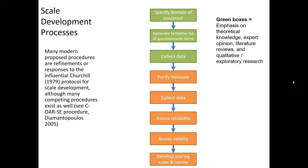Here's the eight-step process that Churchill recommends when developing your own scale. I'm not going to go into the details of how to do this other than just give you a high-level overview. These first three steps — specifying the domain of the construct — is where you're defining the construct very clearly. Then, based on the definition that you have developed, you generate a long list of potential questionnaire items. Sometimes you may generate 40 or 50 different questionnaire items, ultimately realizing you'll only be using a handful of them. Then, based on expert opinion, qualitative research with consumers, focus groups, and literature reviews, you may start to reduce these items down to a more manageable set.